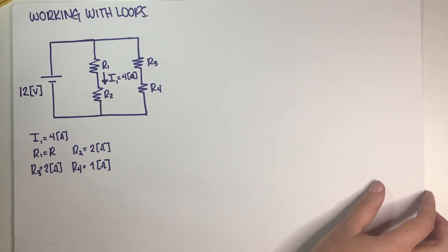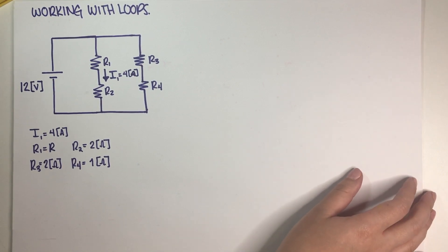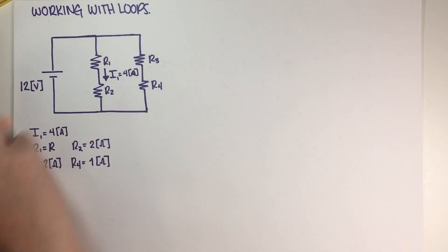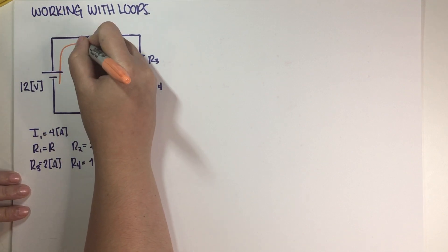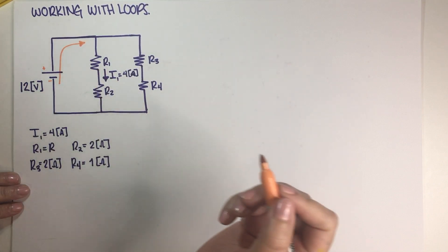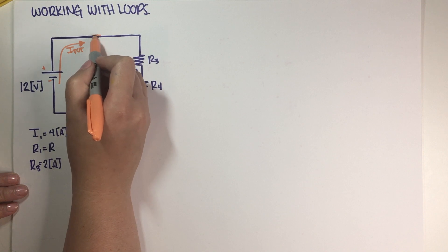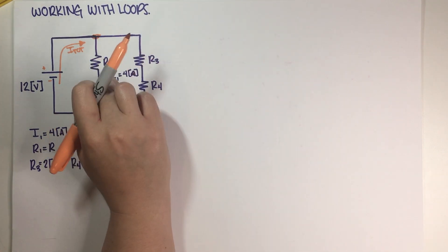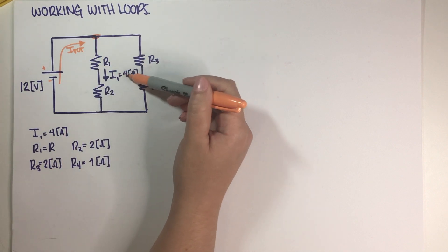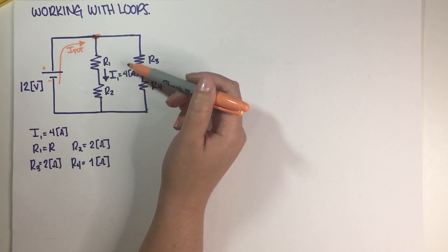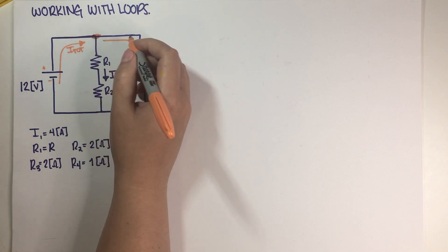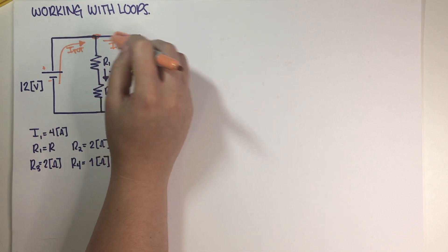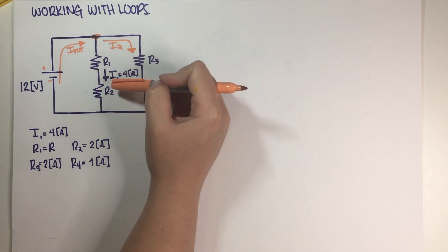The first thing I always like to do whenever I have a circuit with more than one loop is figure out and name all of my currents. I have a total current crossing the battery — remember the total current is always the one crossing the battery and you always want to go from minus to plus. Then once the current hits this junction it's gonna split up. Some of it goes over here at 4 amps, and some of it goes the other way, which the problem calls I2. So we basically have three currents: I1, I2, and I_total.